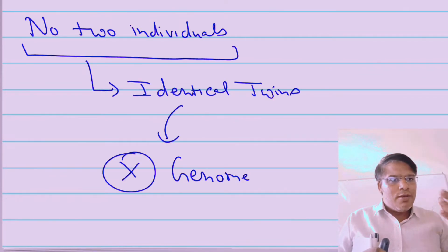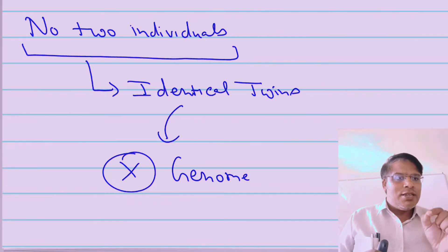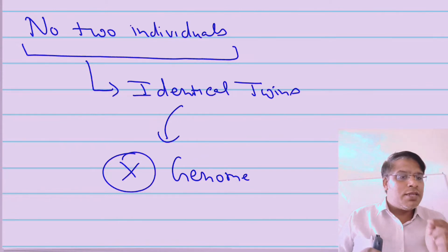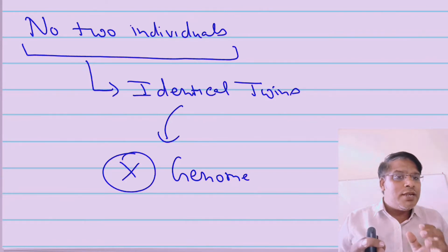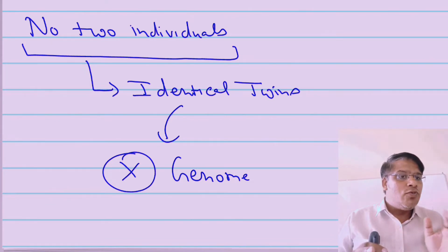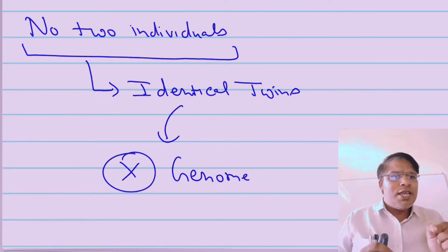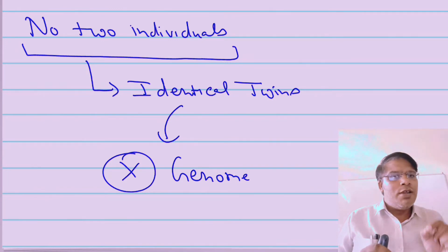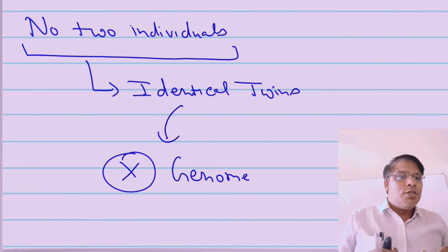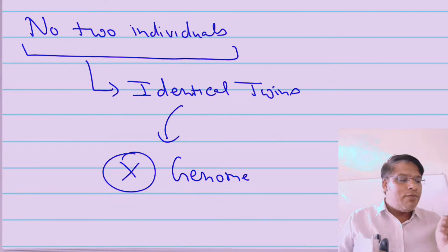If you compare my DNA with your DNA, yes 99.99% of our DNA is going to match. But no two individuals, not even identical twins, are going to have 100% the same genome — the genome is going to vary. You are going to see some differences between two individuals, and these differences can be seen when we perform the process of DNA fingerprinting.